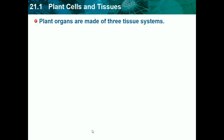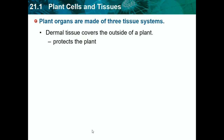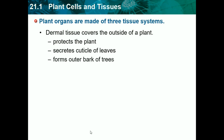Plant organs are made of three tissue systems. We have dermal tissue, which covers the outside of a plant and protects it. It secretes cuticle on leaves. These three tissues we do have to know — it's one of the things they will ask about. Dermal tissue is the outside layer and forms the outer bark of trees. So when you think of dermal, think of the outside, the stem, and the bark.